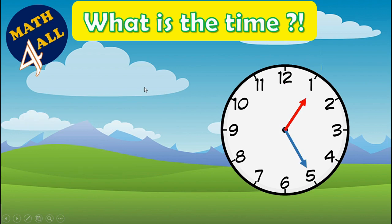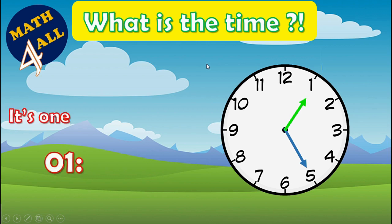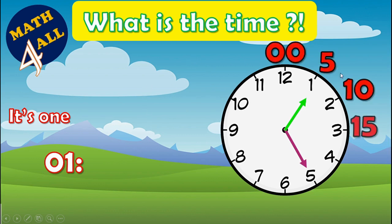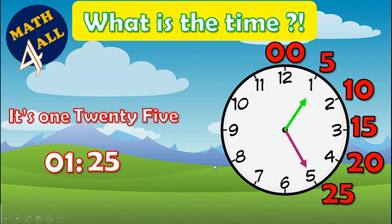Now can you read this? What is the time? The short hand is on one, so you write 'one.' The long hand is on five, so skip count by fives to find the minutes: five, ten, fifteen, twenty, twenty-five. It's one twenty-five.